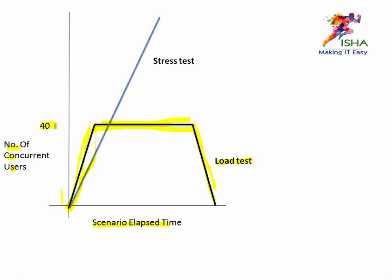Now, what is a stress test? Assuming the peak load is 40 users, in a stress test you don't have a steady state and ramp down — all you have is a ramp up. You keep increasing the number of users way past 40, keep increasing until the system breaks. That breaking point is what you identify with a stress test.